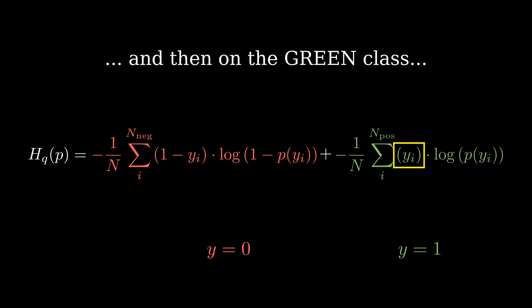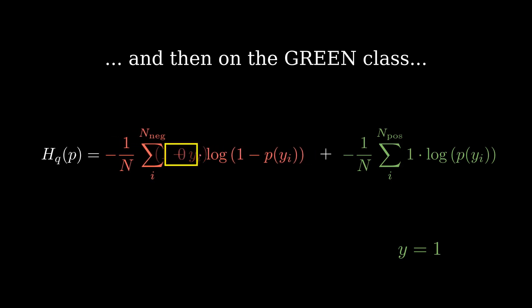Its label is 1. For every green point, this term is always going to be 1. Also, this time, it is the left-hand side of the equation that is going to be 0.